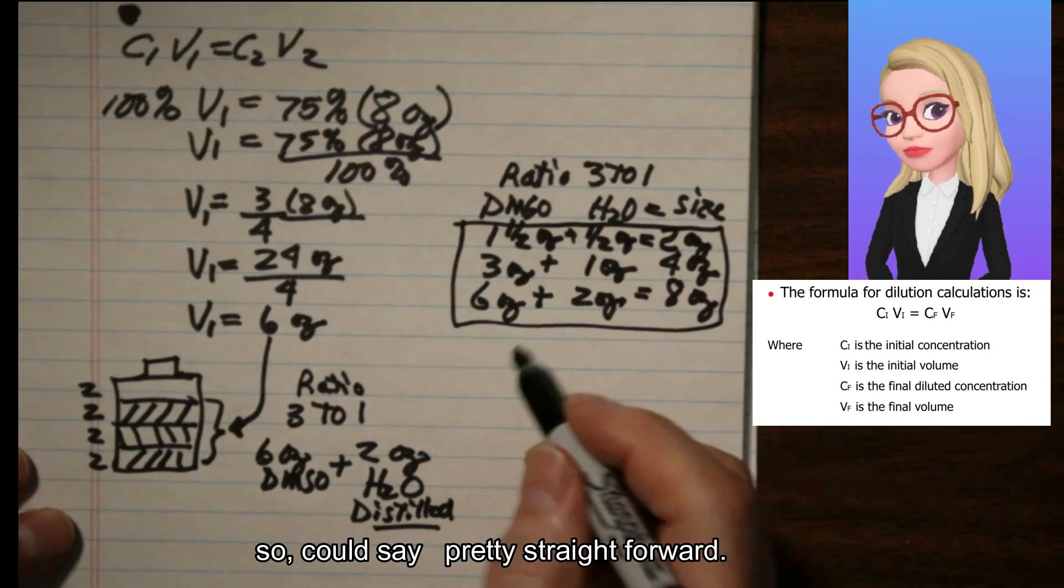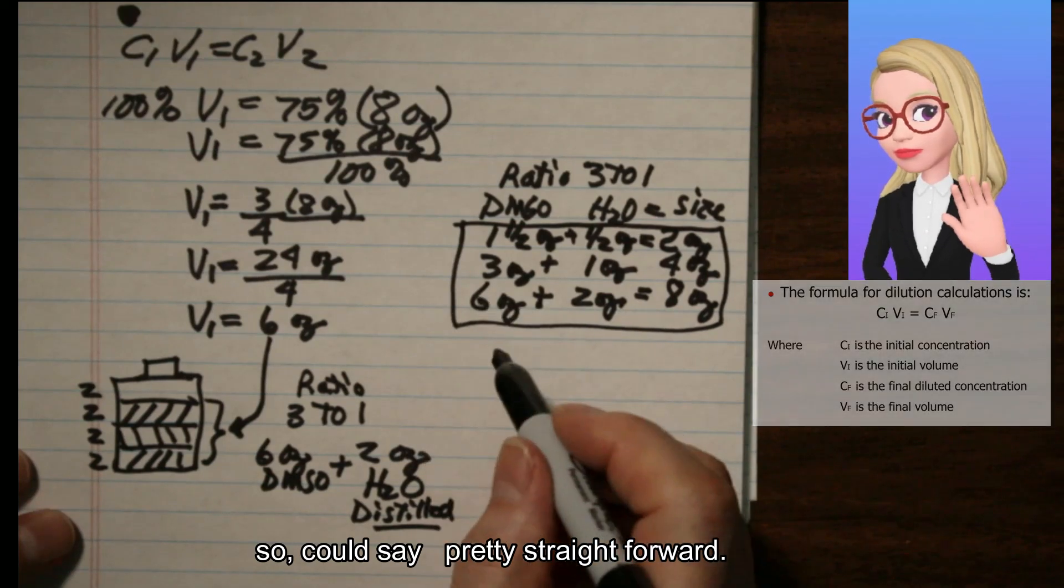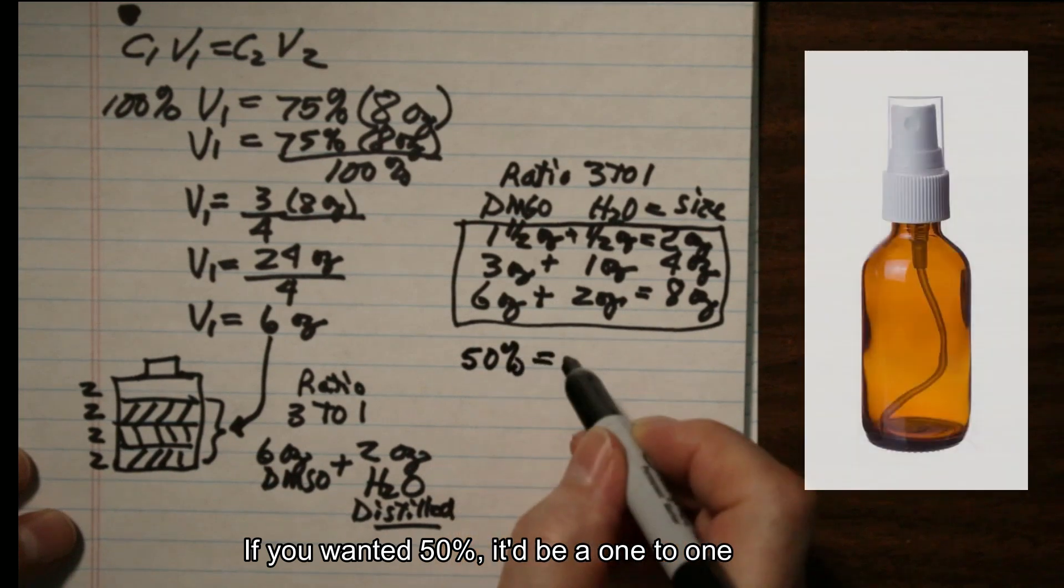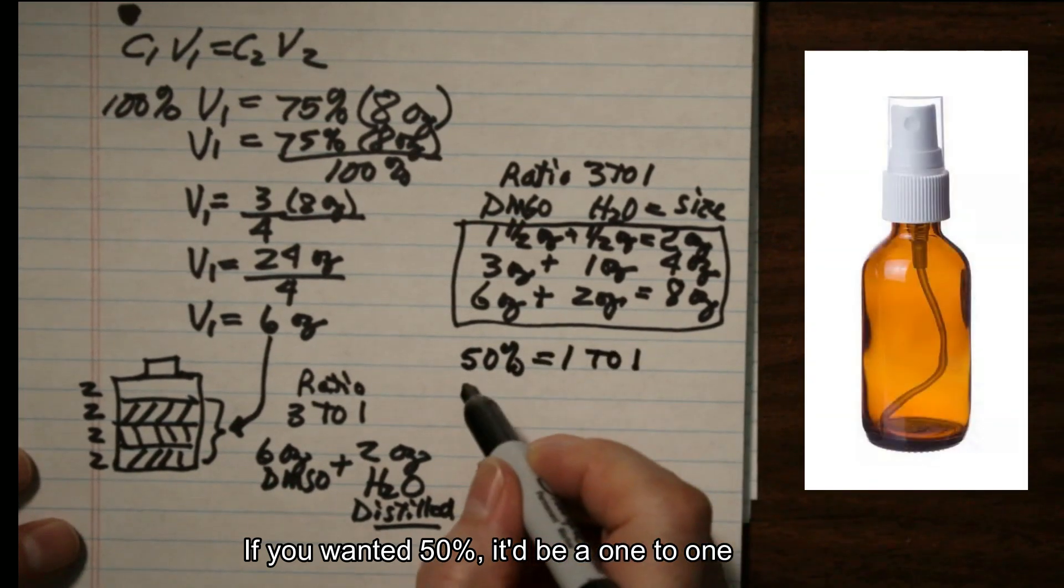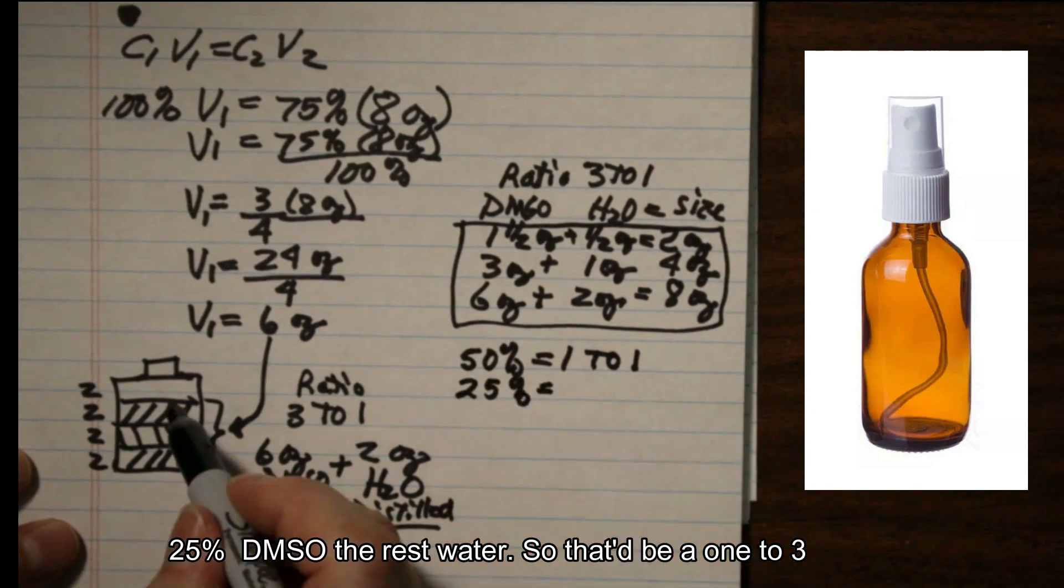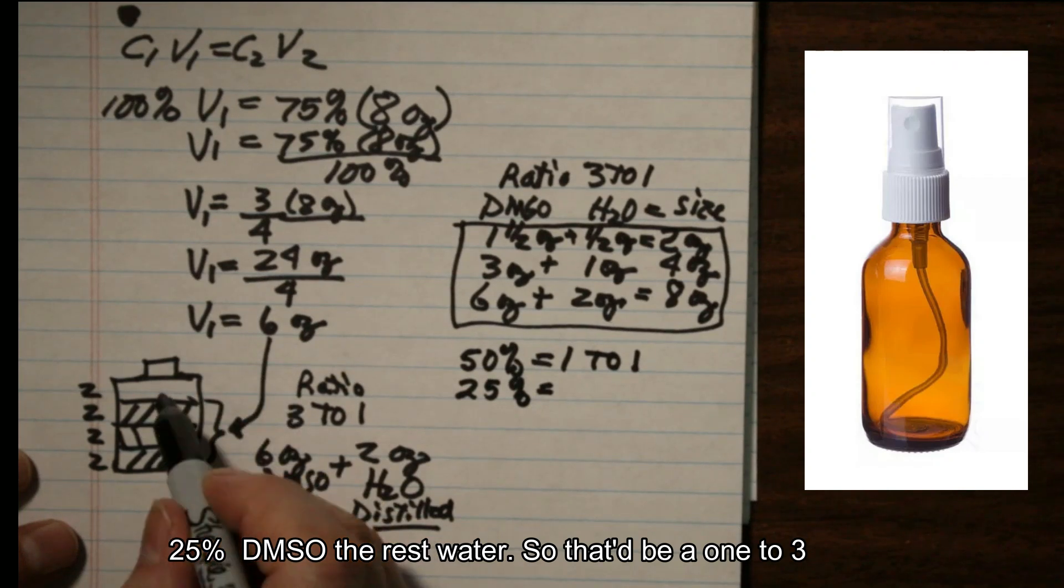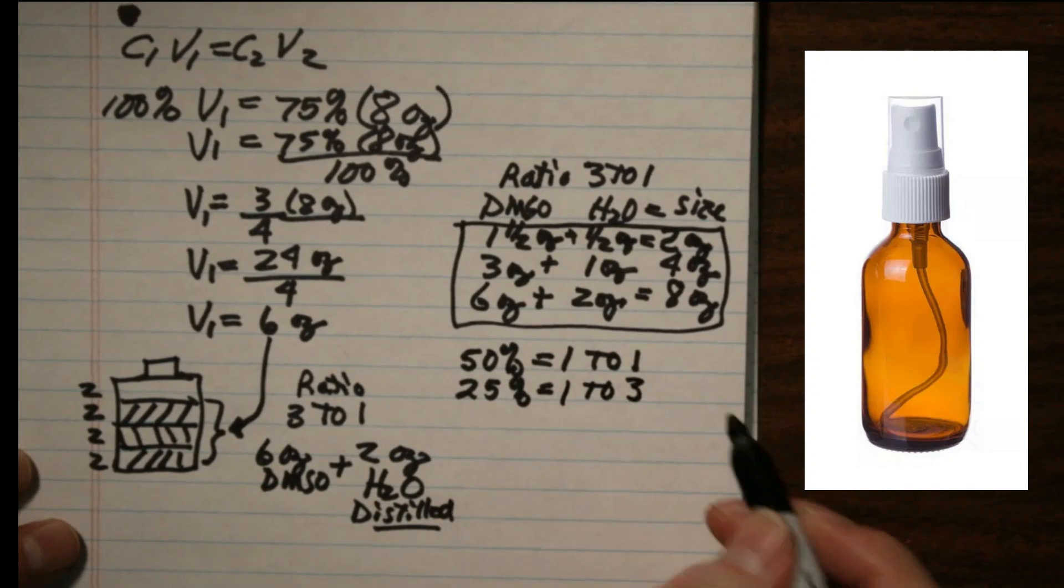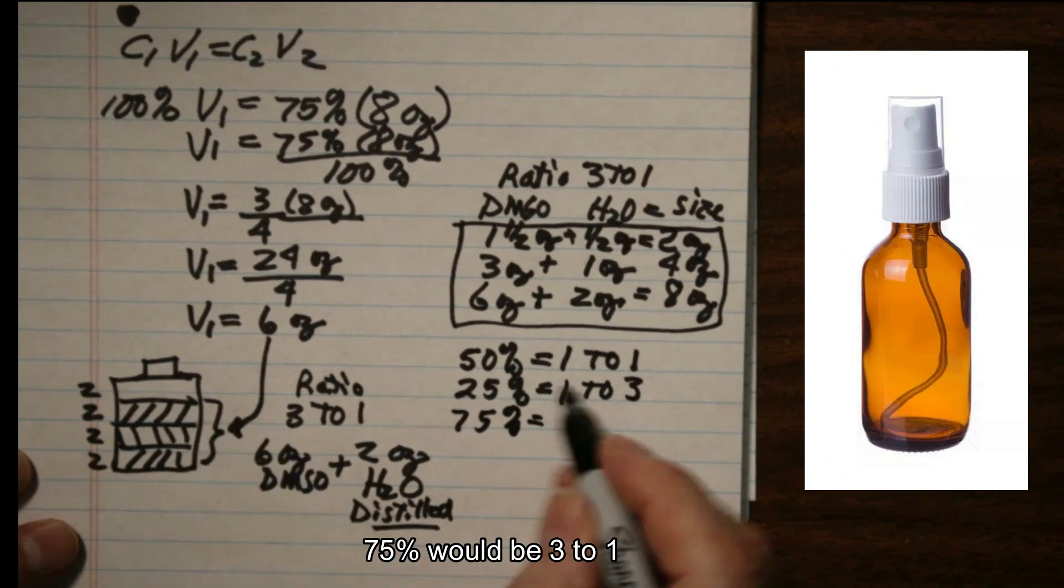So we could say it is pretty straightforward. If you wanted 50% it would be a 1 to 1 ratio. A 25% would be 25% DMSO, the rest water. So that would be a 1 to 3. A 75% is this 3 to 1.